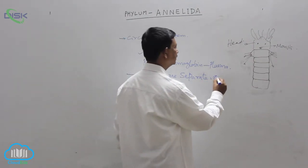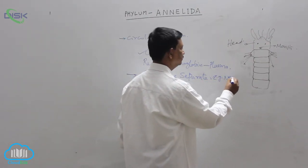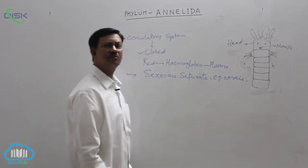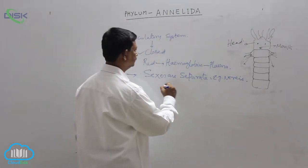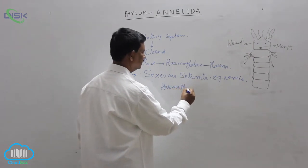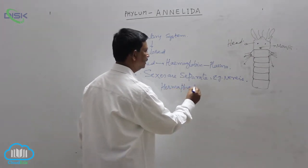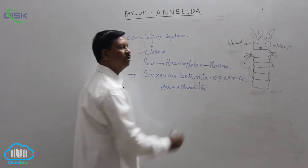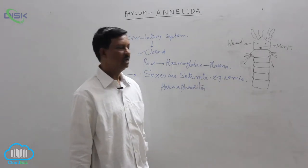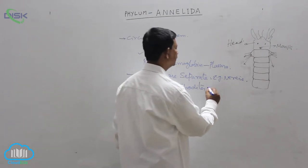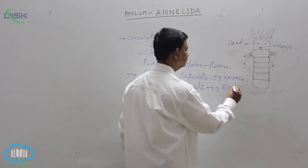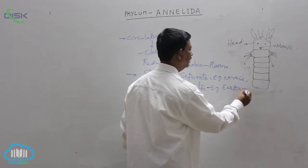Example is Nereis. But some are hermaphrodites also — monoecious. In hermaphrodites, both male and female reproductive organs are present in the same individual. That is why they are known as hermaphrodites or monoecious. Example is the earthworm and leech.